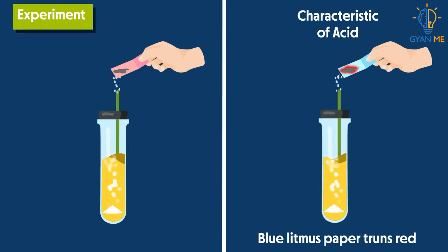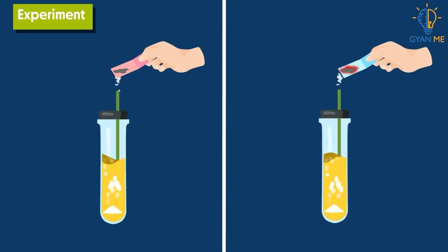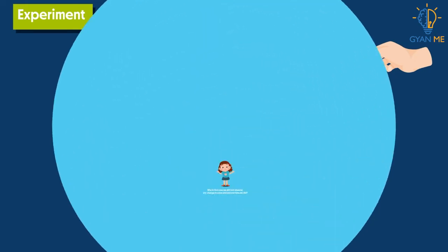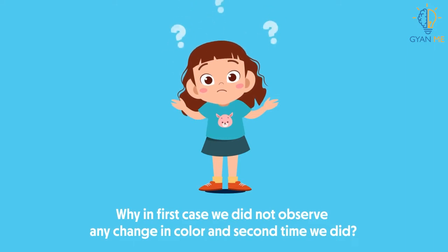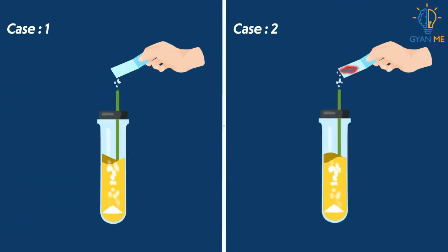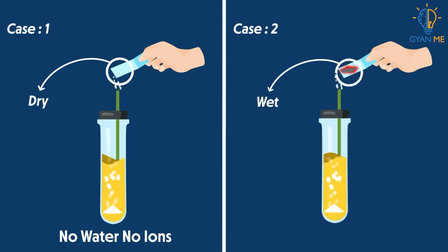Students, think that here we tested with the same gas both times. Then why in the first case did we not observe any change in color, and the second time we did? It is because litmus paper was dry in the first case, while in the second case litmus paper was wet. That is, in the presence of water, HCl dissociated into H+ ions and Cl- ions.